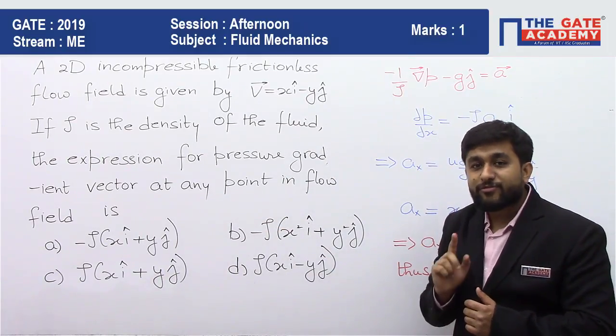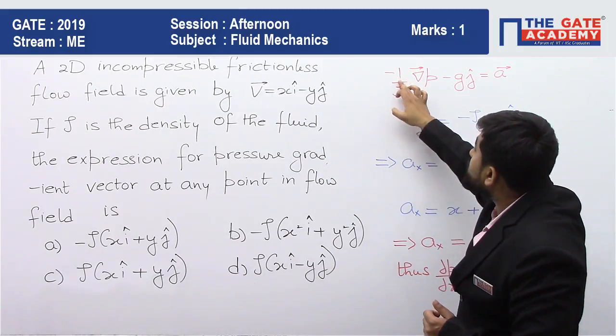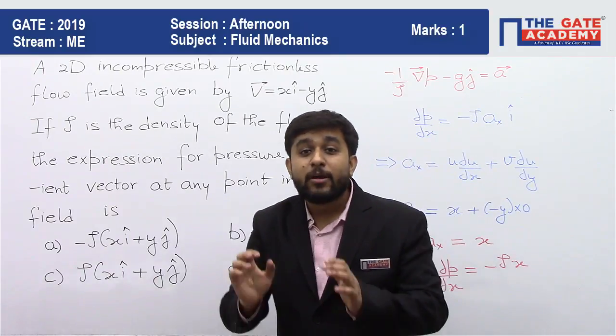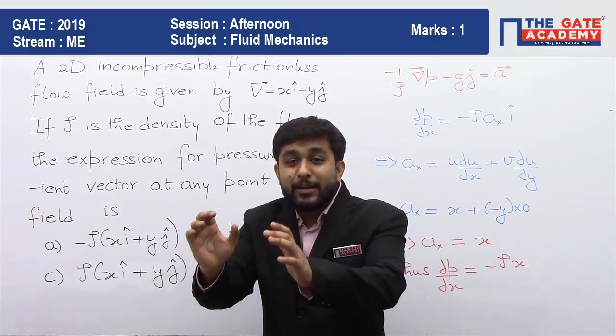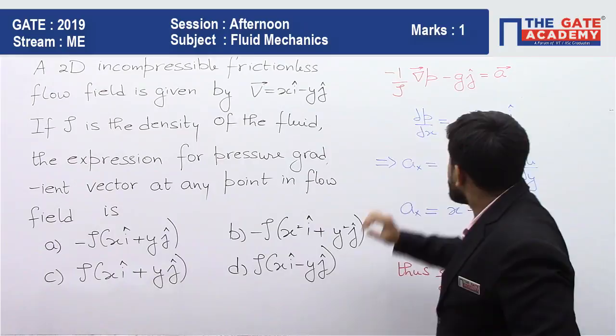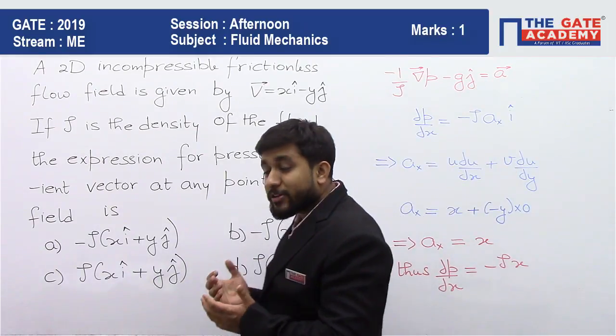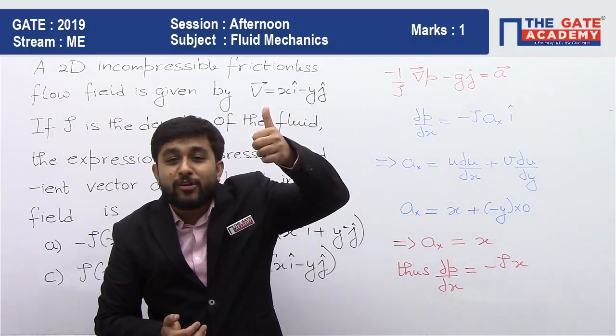I hope you remember that from Euler's equation, minus 1 by rho gradient of pressure, so gradient of pressure means del P by del x i cap plus del P by del y j cap plus del P by del z k cap minus g j cap equal to acceleration vector. Now, in this equation we take y as the vertical upwards direction.